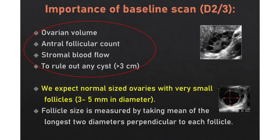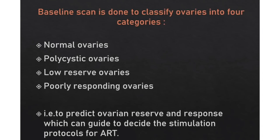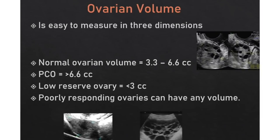The baseline scan is done to classify ovaries into 4 categories: normal ovaries, polycystic ovaries, low reserve ovaries, and poorly responding ovaries, in order to predict ovarian reserve and response to assisted reproductive techniques. Normal ovarian volume is 3.3 to 6.6 cc, whereas polycystic ovaries have a volume more than 6.6 cc. Low reserve ovaries have a volume less than 3 cc, whereas poorly responding ovaries can have any volume. Increased volume indicates polycystic or multicystic ovaries, whereas a low ovarian volume does not always lead to anovulatory cycles.